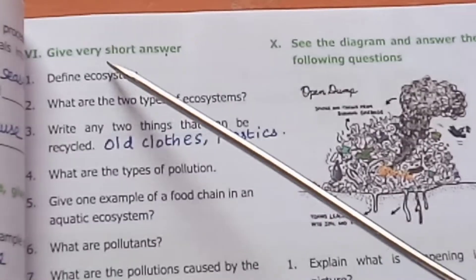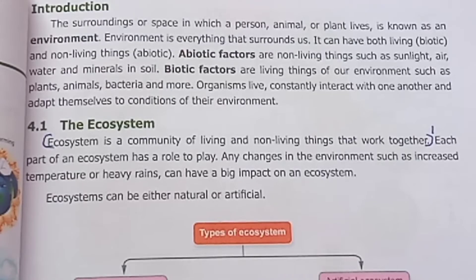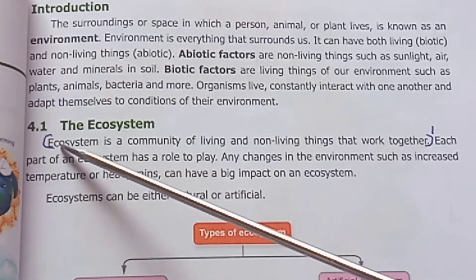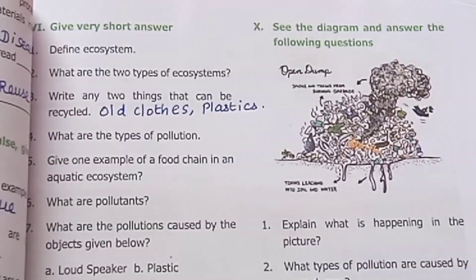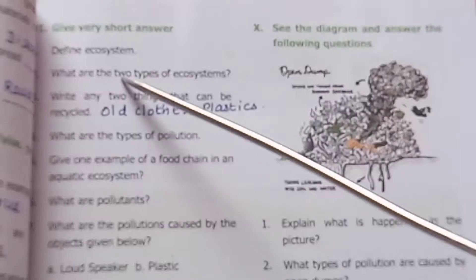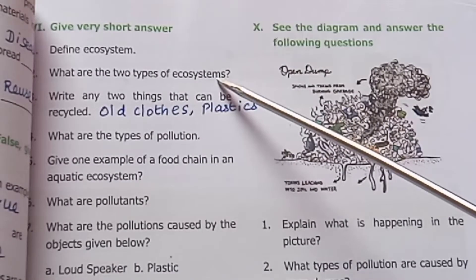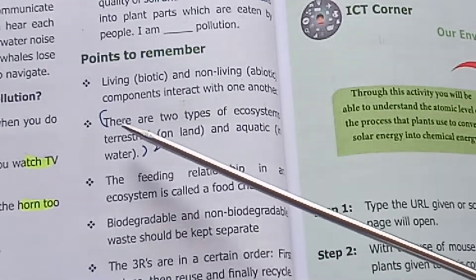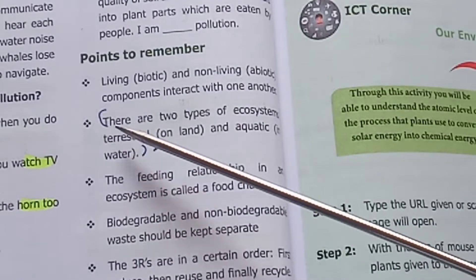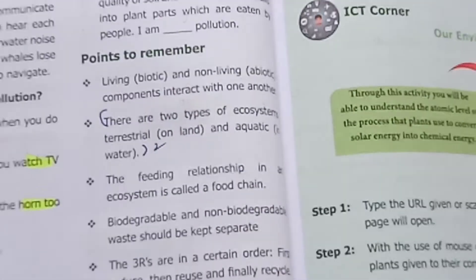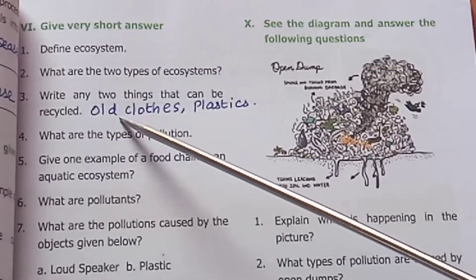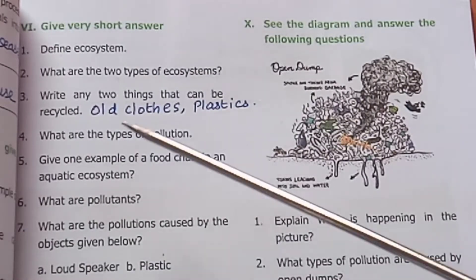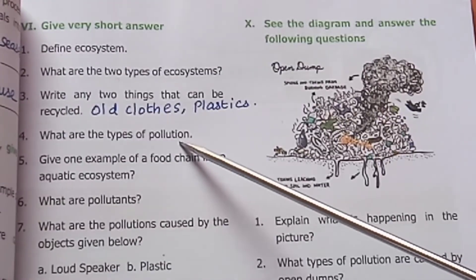Very short answers: Define ecosystem - organisms work together in their environment. What are the two types of ecosystem - there are two types: water (aquatic) ecosystem and terrestrial ecosystem. Write any two things that can be recycled - plastics and glass.